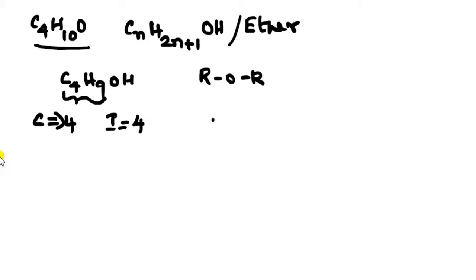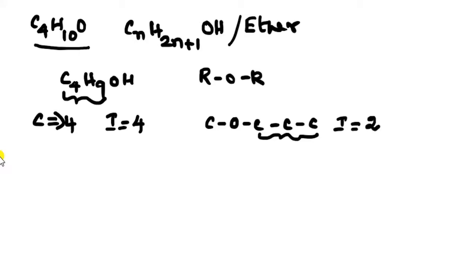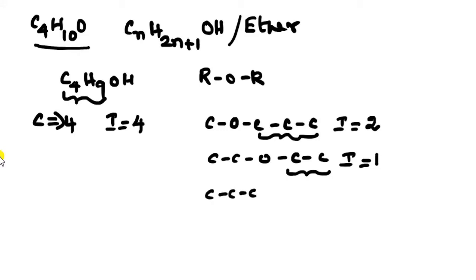In the case of ethers, the four carbons split across the oxygen. With one carbon on one side and three carbons on the other side, the bulky side has 3 carbons — and for carbon number 3 the isomers are 2. By altering the carbon split to 2 and 2, the number of carbon is 2 so the number of isomers is 1. Increasing further repeats a previous structure, so the ether isomers total 3.